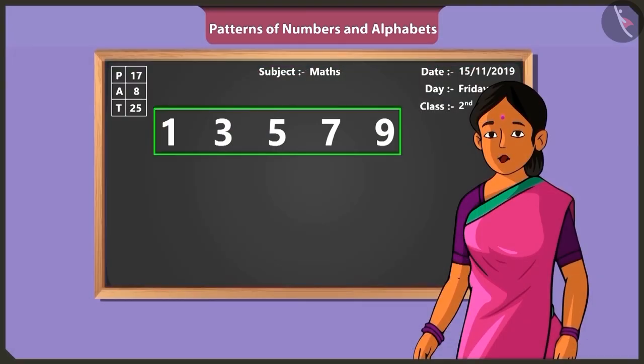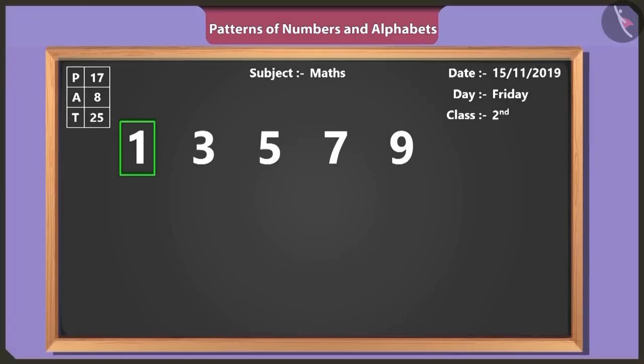Vinny, can you see a pattern in these numbers? One, three, five, seven, nine. These numbers are written in ascending order. So tell me, which number comes after nine? Ten comes after nine.